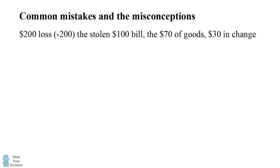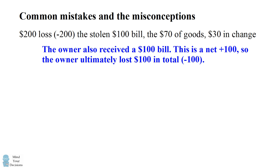So why are so many people getting this problem wrong? One of the common answers is there is a $200 loss to the owner. Many people think this is because in the first part of the story the owner loses $100 that's stolen, and then in the second part the owner loses another $100 because the owner is giving up $70 worth of goods and $30 in change. The mistake here is that it's not taking into account that the owner is also getting a $100 bill. When you take that into account, that adjusts the total by plus $100, meaning the owner ultimately lost $100 in total.